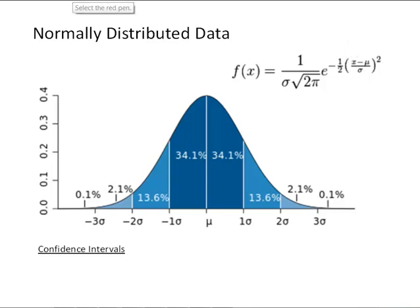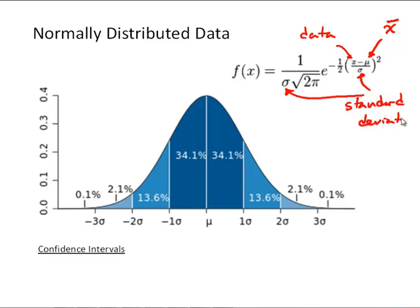In this case, x is our data points. Mu is actually the mean, so it will be x bar. And sigma is the standard deviation. So that's the equation that describes the bell curve.